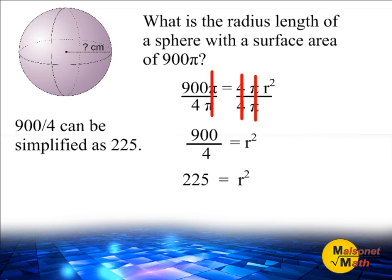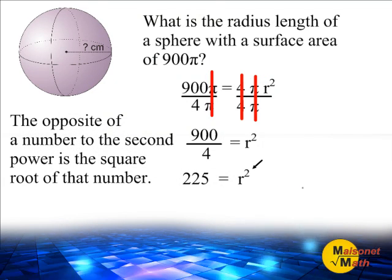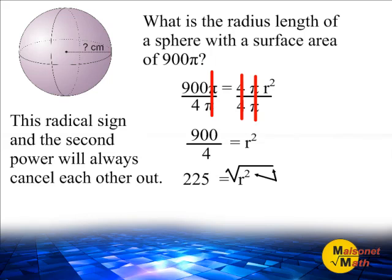Now we have to figure out what is the value of r so when we square that number or multiply it by itself, it would give us a product of 225. Well to isolate our variable even further, we have to cancel out that exponent of 2. And the opposite of something to the second power is the square root of that number. By writing a radical sign over any value to the second power, they would cancel each other out.